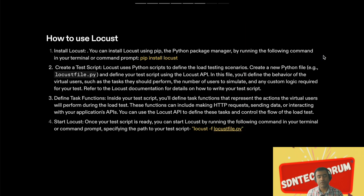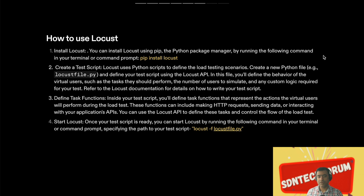Here are the steps to use Locust. First, install it — you can clone it from GitHub or simply run 'pip install locust' on your development machine. I highly advise creating a virtual environment before installing. Next, create the test script: Locust uses a Python script to define load testing scenarios. All test scenarios are located in 'locust_file.py', which comes by default when you install Locust. In this file you define the behavior of virtual users, such as tasks they should perform, number of users to simulate, and any custom logic required.